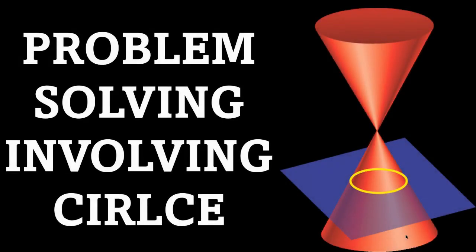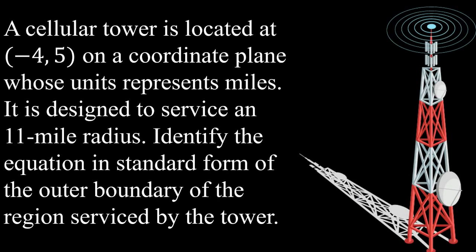Good day everyone, today we are going to solve a problem involving circles. A cellular tower is located at (-4, 5) on a coordinate plane whose units represent miles. It is designed to service an 11-mile radius. Identify the equation in standard form of the outer boundary of the region serviced by the tower.